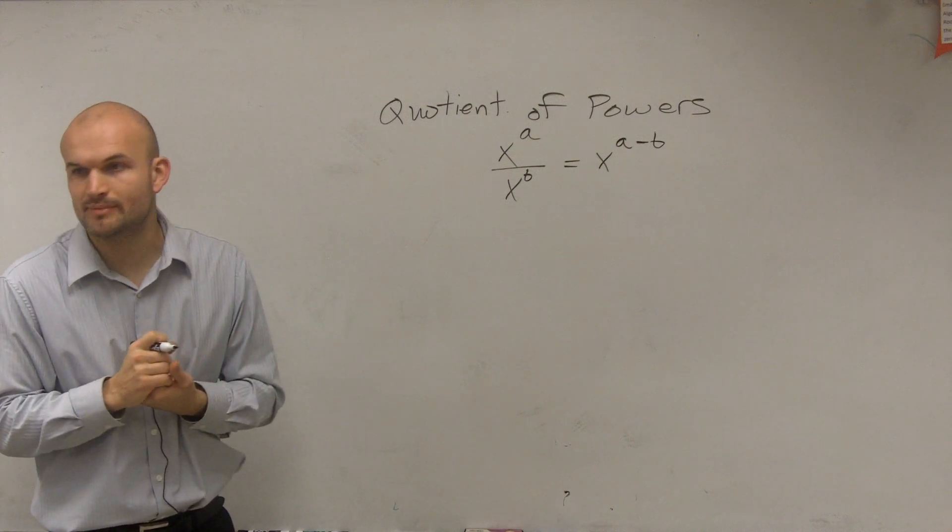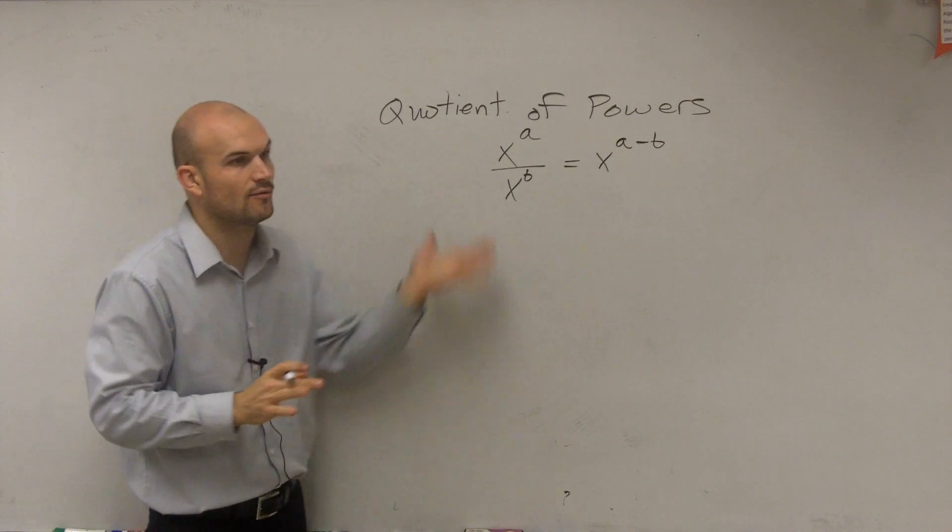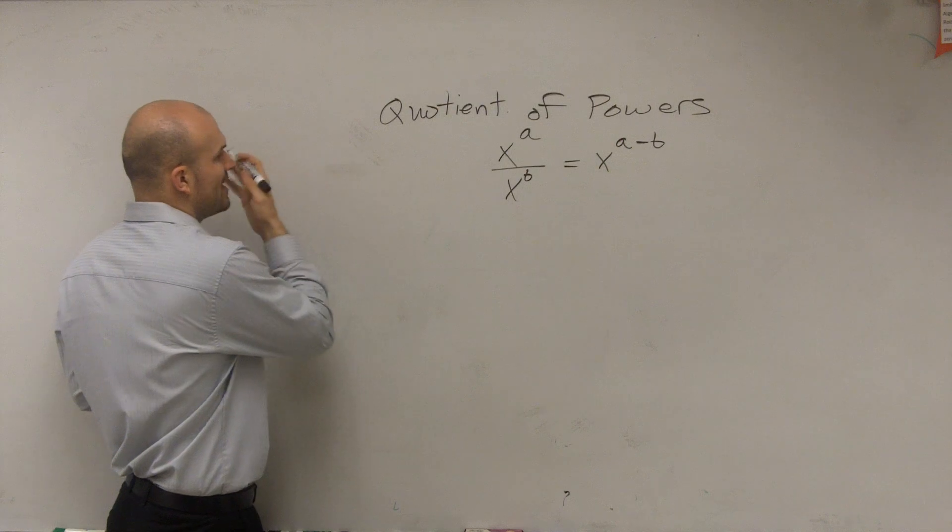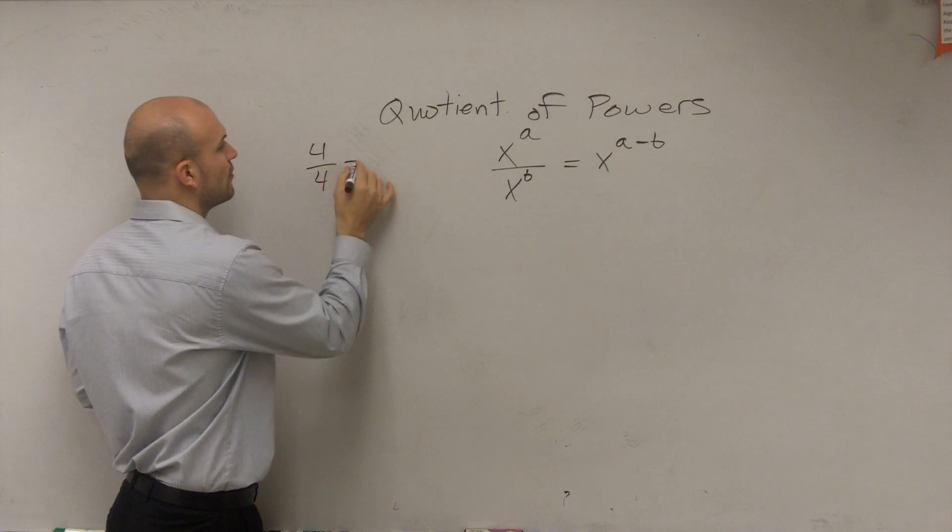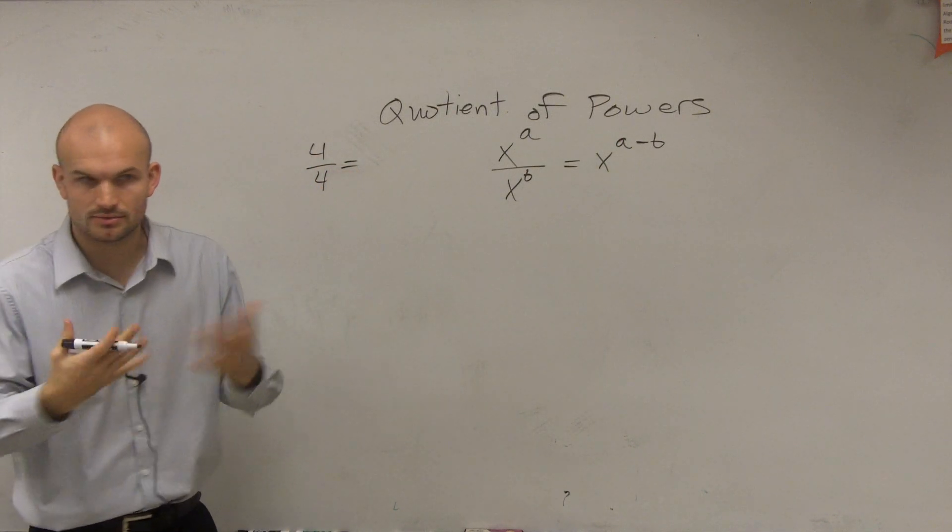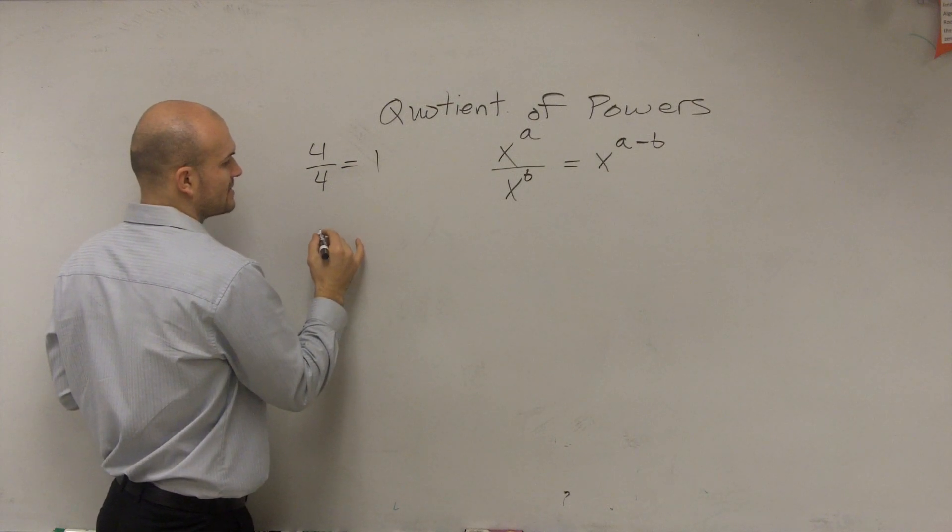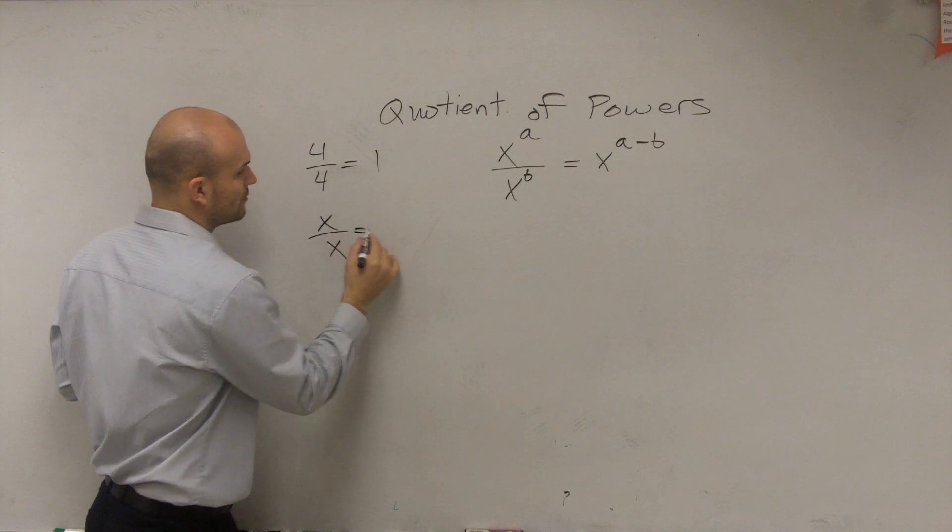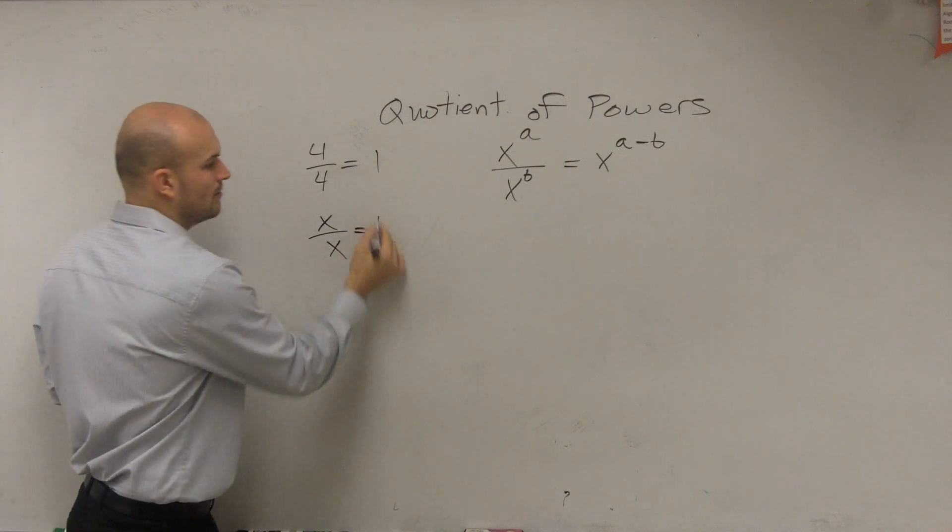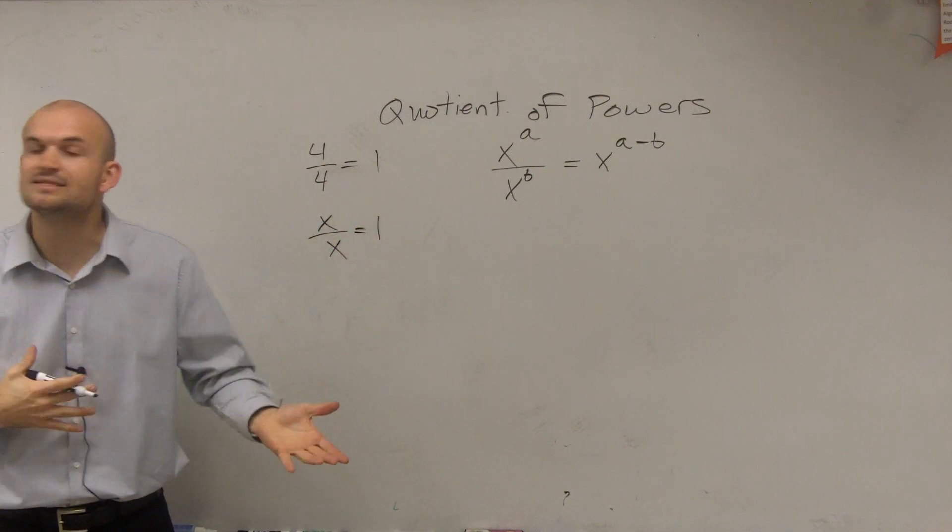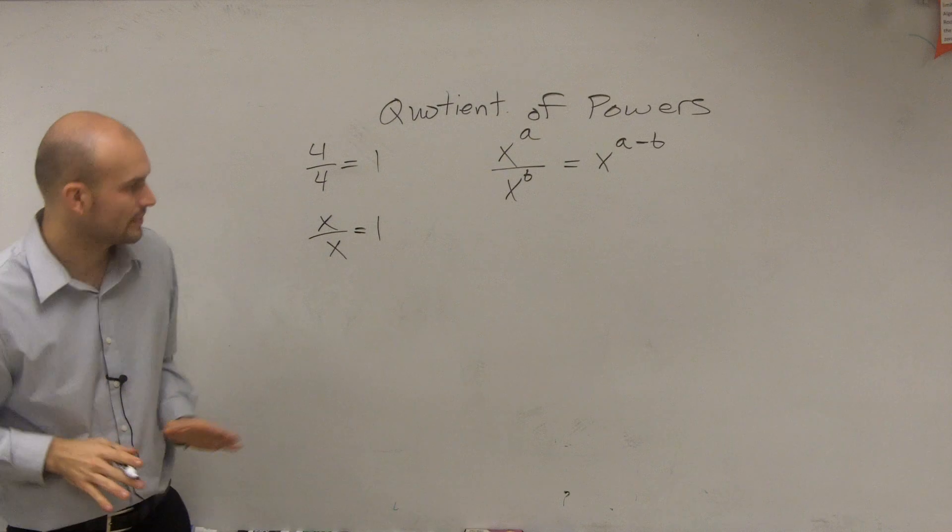Alright, so let's go and see how this really makes sense. A couple things for us to understand why this is going to make sense. One thing, if I had 4 divided by 4, we know it's going to equal 1. So therefore, you could say that x divided by x equals 1. Any term divided by itself is going to equal 1.